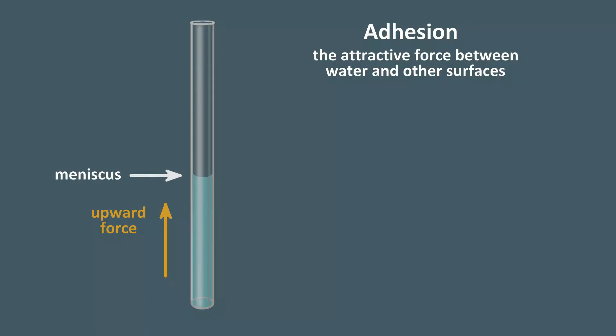Adhesion creates a meniscus at the sides of the glass tube. There is also the downward force of water in the column due to gravity.